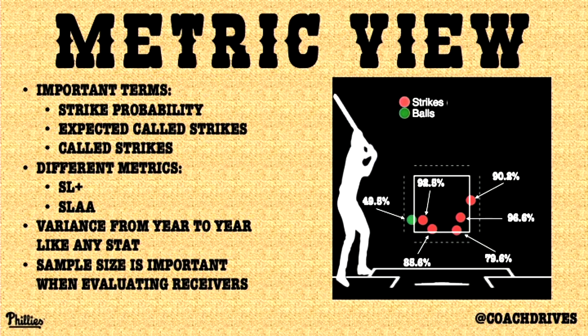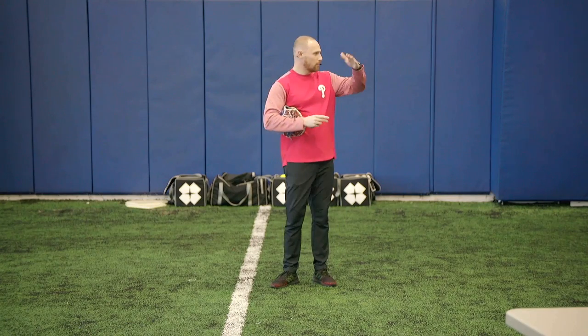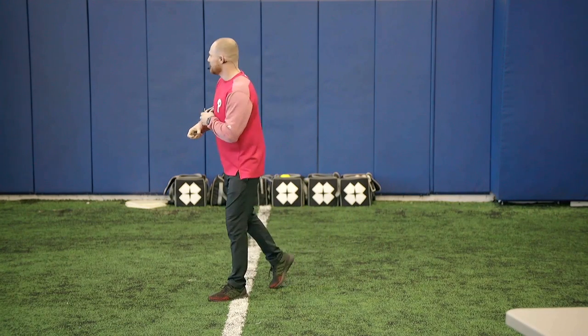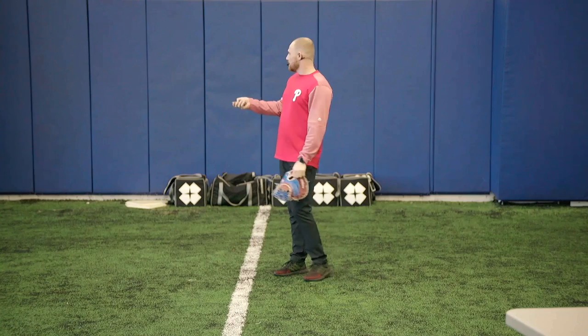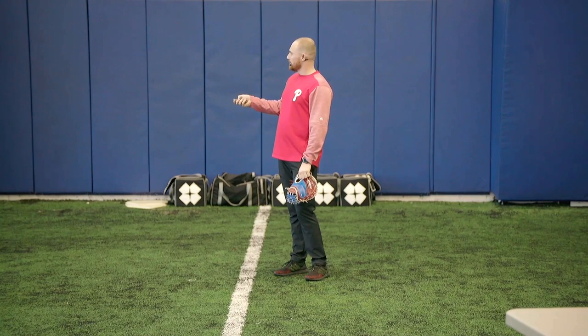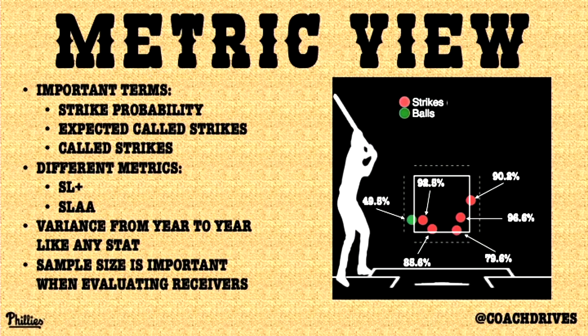Things that you need to know: strike probability. Every pitch has a coordinate that it goes through — an x-axis and y-axis, just like you learned in math class. Because of that, we can decide based on past history how many times a pitch was called a ball or a strike. If you look at the green one, that's a ball — it's 49.5%. On the other side, just a little bit inside the box is a 96.6% strike.